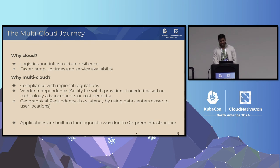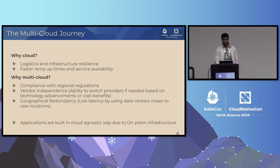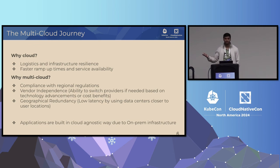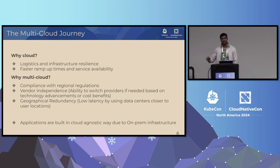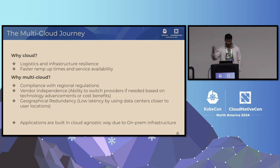There might be a question: how did you guys handle this multi-cloud migration? In the Kubernetes ecosystem, anytime an outage happens at one cloud provider, everybody starts talking about multi-cloud. But it's not that easy if your applications are very much tied to those cloud provider services — for example, S3, Lambda, whatever you're using. But for us, that's not the case because we started our journey with on-prem.